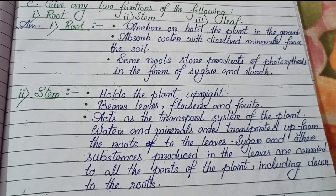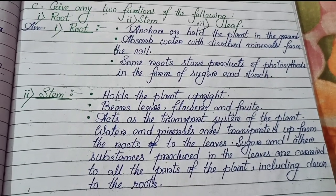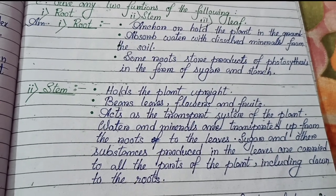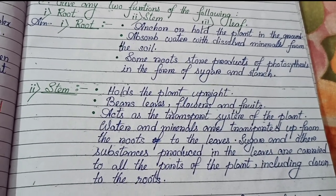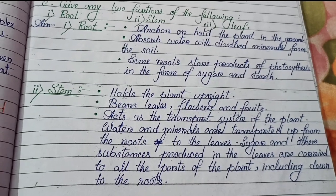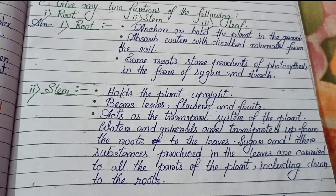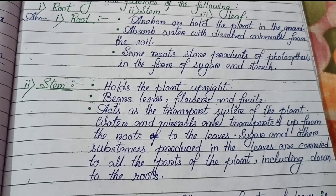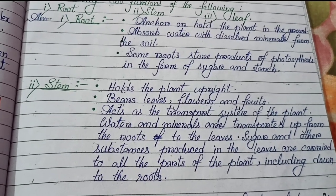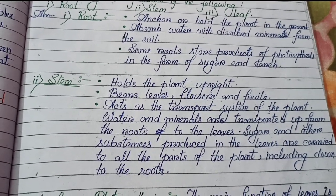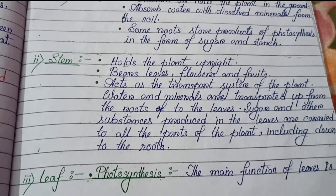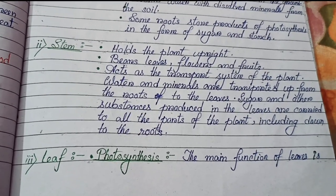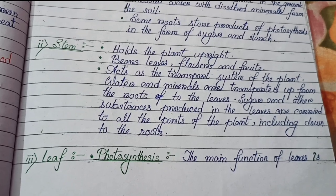Stem functions: first, holds the plant upright; second, bears leaves, flowers and fruits; third, acts as a transport system of the plant — water and minerals are transported up from the roots to the leaves, and sugar and other substances produced in the leaves are carried to all parts of the plant including down to the roots.